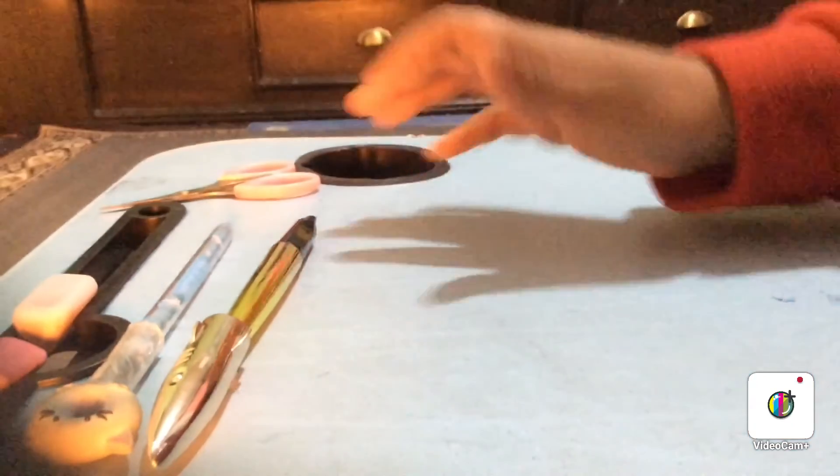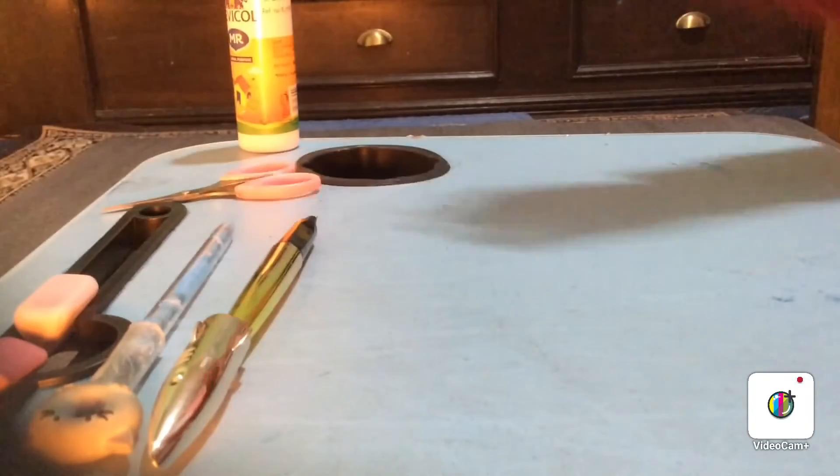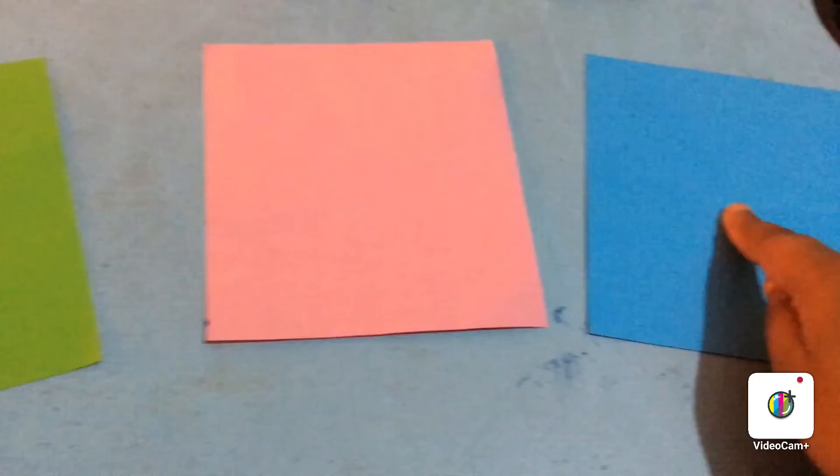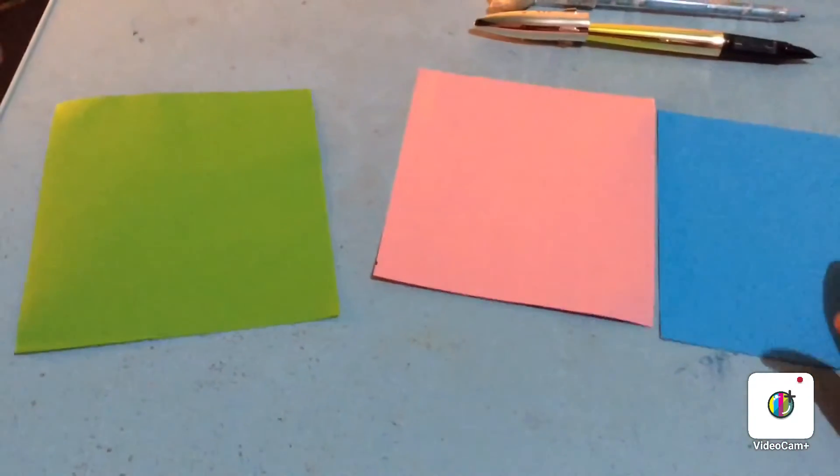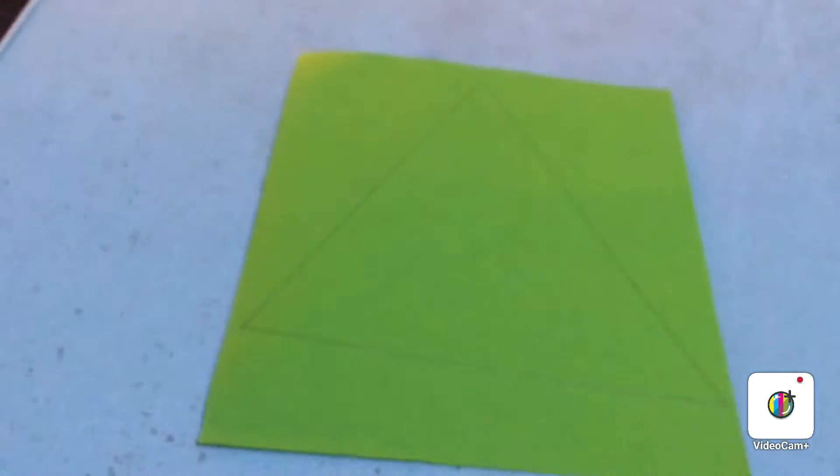So now let's start our project work. First we will be taking a colorful paper which I have cut in square pieces and draw a few triangles in it.